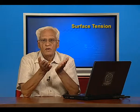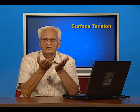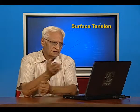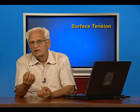If the angle of contact is less than 90 degrees, the liquid will wet. In the case of mercury, the angle is more than 90 degrees and therefore mercury will not wet. So what happens to mercury? If it falls on a glass plate, it will break up into small spherical drops.